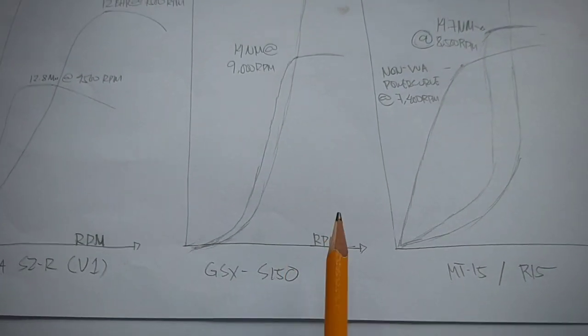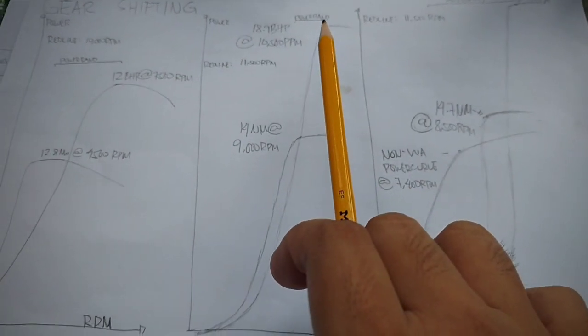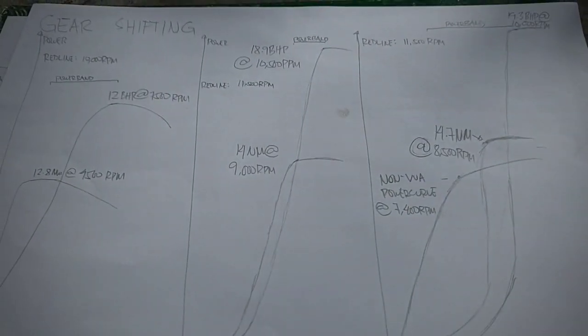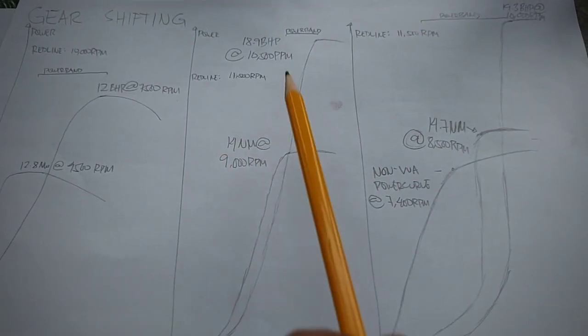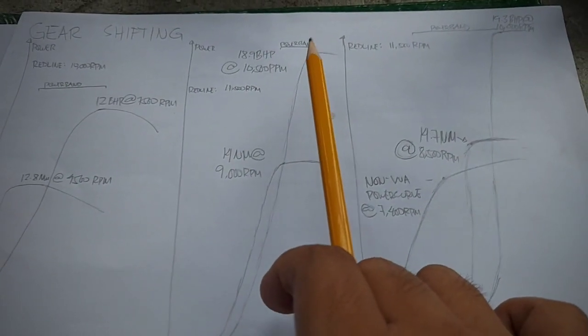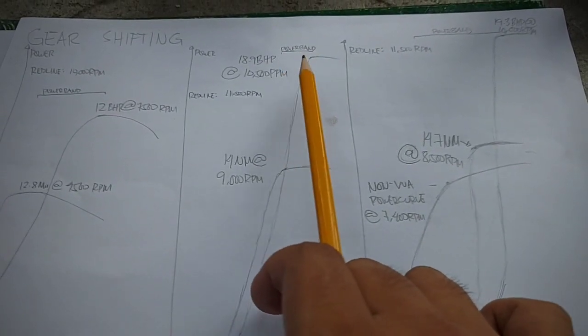Whereas, itong mga high RPM bike, kailangan mo muna ng mahabang birit bago siya kumatak. And kailangan mo bumirit ng bumirit para maintain yung RPM para manatili ka sa power band kasi nga maigsi lang siya.